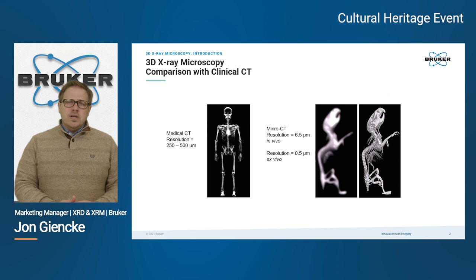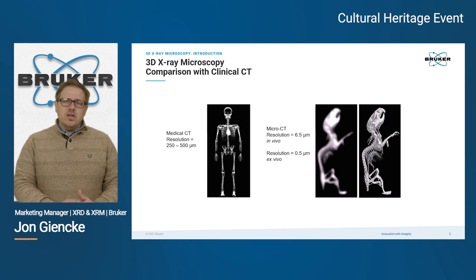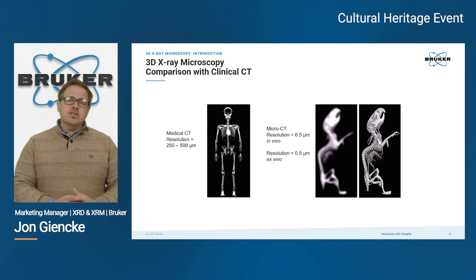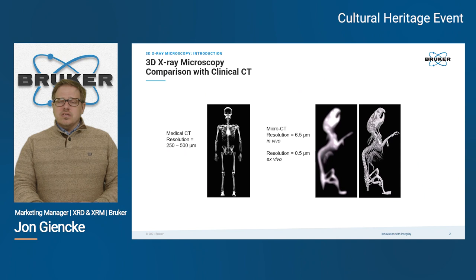One thing to keep in mind is that the images we're looking at are only a subset of the available data. These are two-dimensional images of the objects, but there is a full three-dimensional model where you can rotate, examine, and change the density distributions to get a more complete view of the specimen in its entirety.